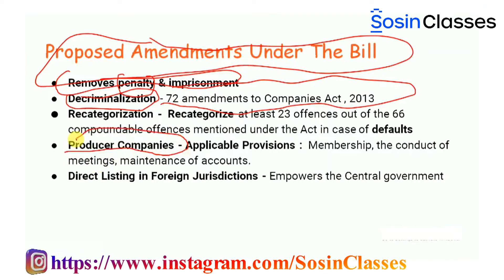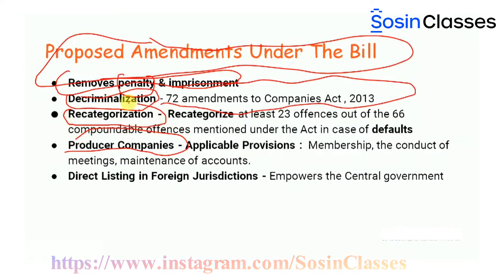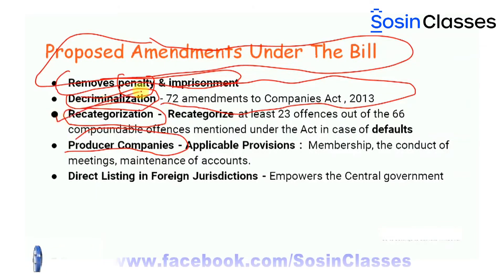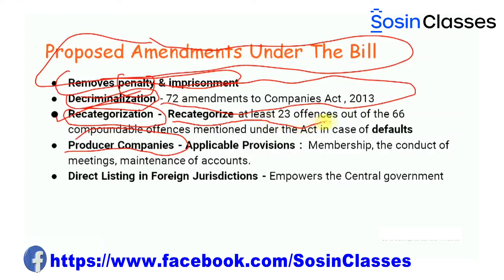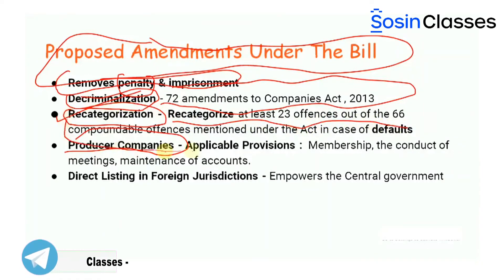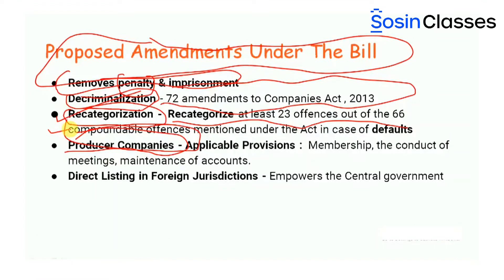Before producer companies, we have recategorization. The changes in this bill will recategorize at least 23 offences out of 66 compoundable offences. Compoundable offences are simply those which will not need any court permissions and can be mediated or resolved by the disputing parties themselves. These compoundable offences under the Act apply in cases of defaults that do not involve any element of fraud or large public damage.